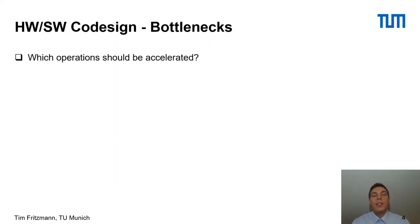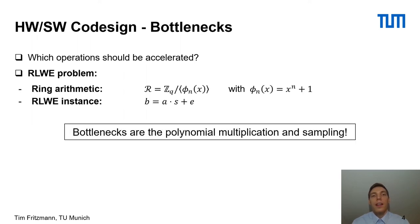The question is: which operations should we accelerate in hardware? To answer this, let us look at the ring learning with errors (RLWE) problem, which can be used as a main tool to create ideal lattice-based cryptography. Creating an RLWE instance requires polynomial multiplications and additions. Moreover, we need to sample random polynomials, such as the random polynomial A, the secret polynomial S, and the error polynomial E. So the performance bottlenecks of ideal lattice-based cryptography are the sampling of random polynomials and the polynomial multiplication.